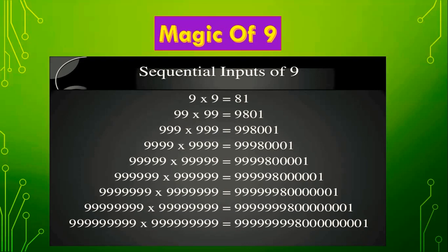Second stage: 99 × 99 = 9801. Just, we can get this number from the first result 81 — a 9 is added in front of 8, and a 0 is added in front of 1. Next, 999 × 999: again, this can be obtained from the previous number. Two 9s are added in front of 8, and two 0s are added in front of 1.